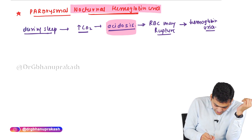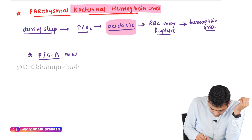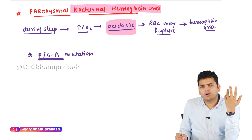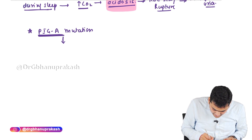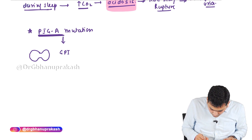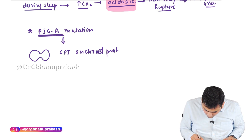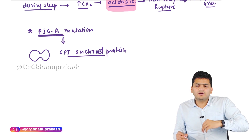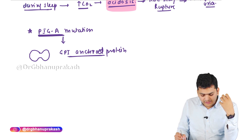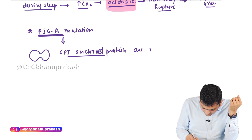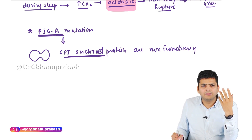But if someone has a PIGA gene mutation, then in the RBCs we have something called GPI-anchored proteins, and these will not function properly. Normally these GPI-anchored proteins protect us from hemolysis during the acidosis phase. If the PIGA gene is mutated, these GPI-anchored proteins become non-functioning.